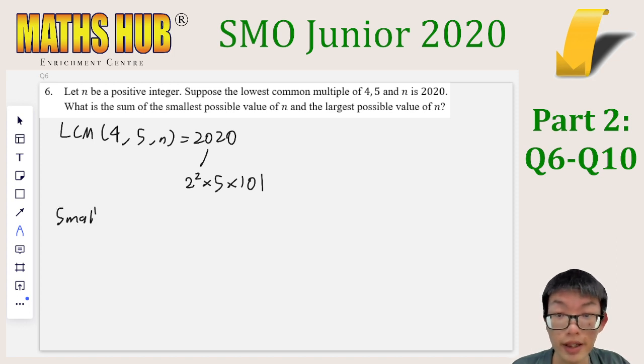To find the smallest possible n, we are essentially asking ourselves this: What n can I put in such that it is necessary to have all of these factors in the lowest common multiple? Going on this logic, it should be quite clear that 101 is precisely what we need in order to make 101 a required factor in the lowest common multiple.